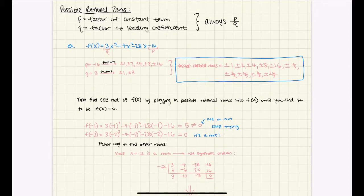So to start off, there's going to be a p and a q. The p is the factor of a constant term, and the q is going to be the factor of a leading coefficient.